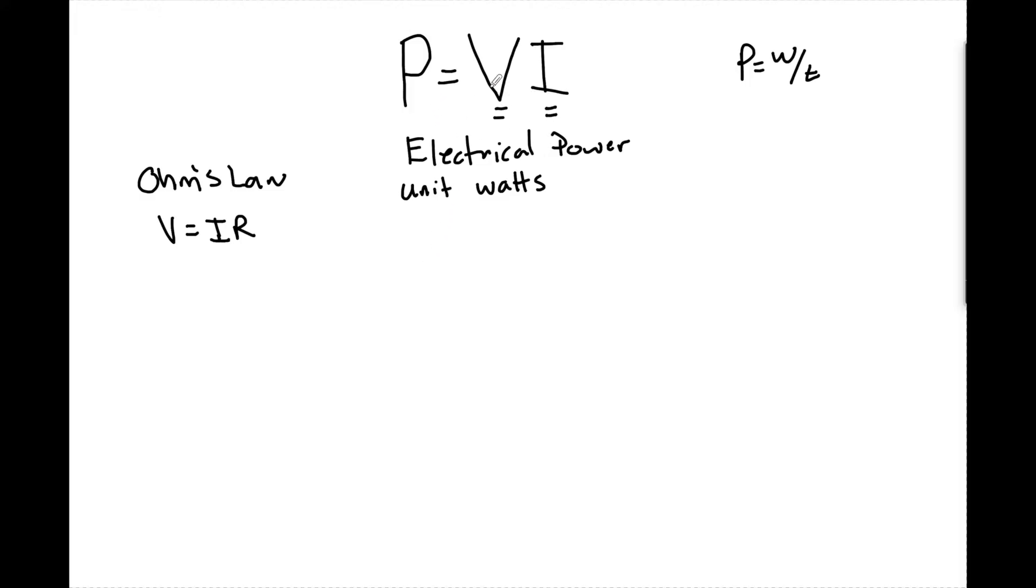So essentially what I want to see is what happens when we are not given P, V, and I. Well one thing we can do is we could say that V equals IR, right? So if I look at this formula now I could say that P equals that substitution for V which is really IR times the original I that I had in the formula. So now we have a variation of the power formula which is just P equals I squared R.